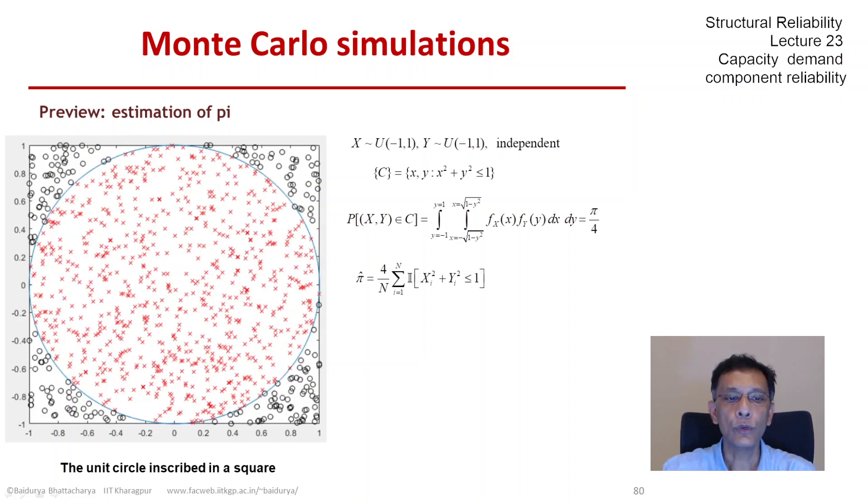And we showed that if we estimate this by Monte Carlo simulations, if we can generate x and y independently between minus 1 and plus 1 from a uniform distribution each, then we can indeed estimate pi and the estimate became better and better as more and more samples were generated.